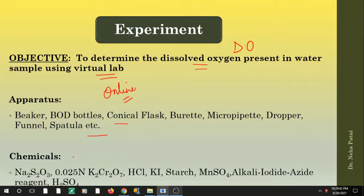The chemicals we are going to use are similar: sodium thiosulfate, potassium dichromate, hydrochloric acid, potassium iodide, starch as an indicator, manganese sulfate, alkali iodide azide reagent, and sulfuric acid. The same chemicals we are going to use here as well.